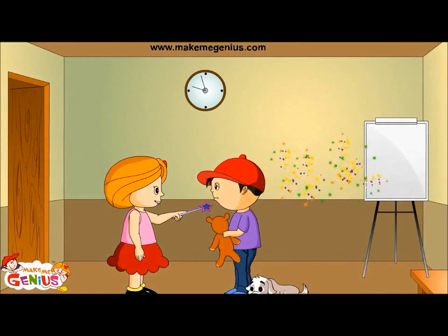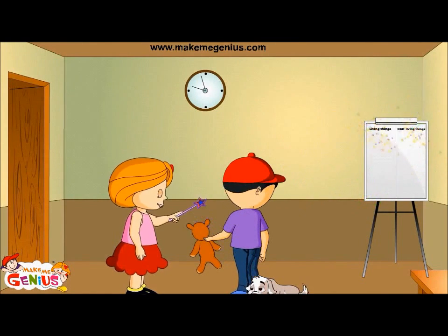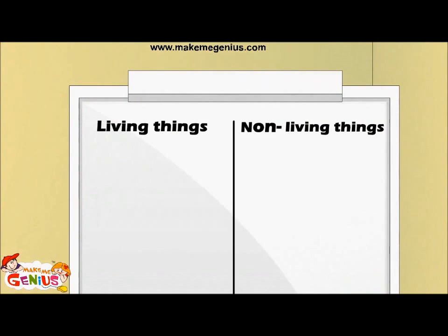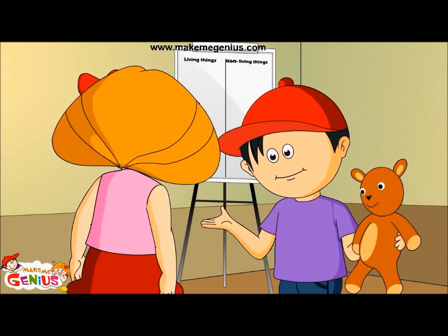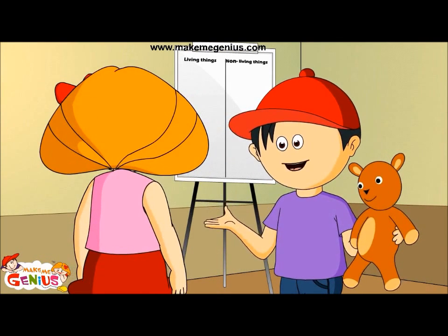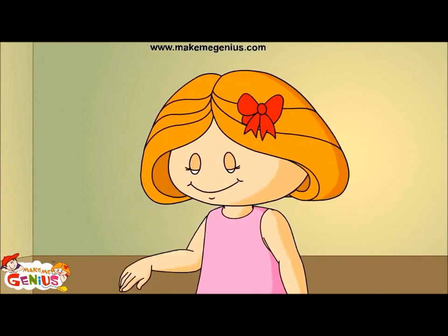Look at this chart. On one side I have written 'living' and on the other side I have written 'non-living.' So now you will write the differences between the two, right?